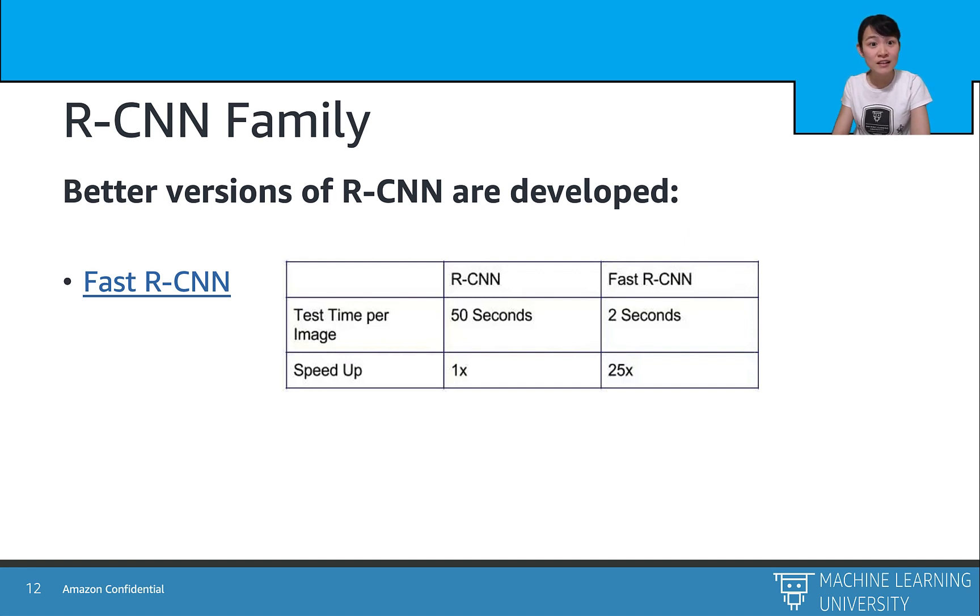So after the R-CNN came out, researchers accelerate the innovation process by developing more faster and accurate models, such as the Fast R-CNN. As we can see in the table here, at the test time or the inference time, the original R-CNN detection with VGG-16 takes about 50 seconds per image, which is super slow.